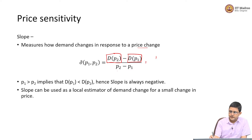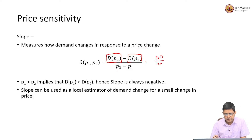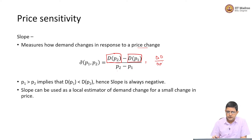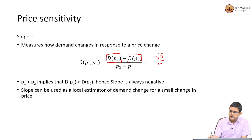So essentially it is the delta in demand divided by delta in price — a very simple ratio of change in demand divided by change in price.